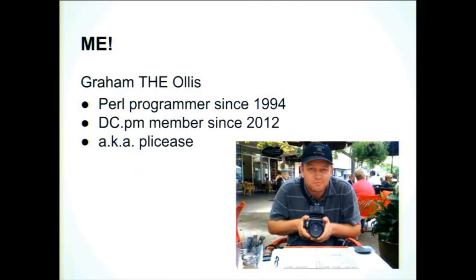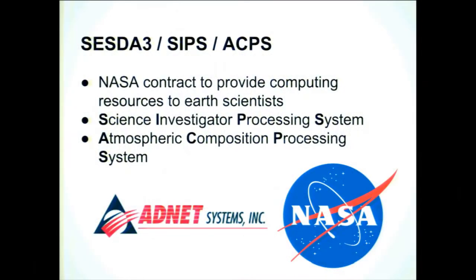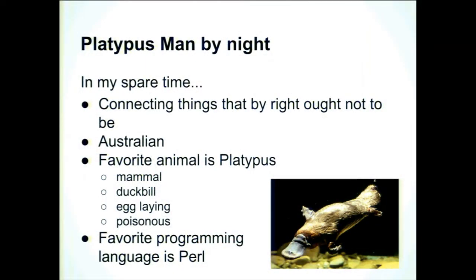Most of you probably don't know who I am. My name's Graham Ollis. I've been a Perl programmer for about 20 years, but most of the time has been spent on dark pen projects. Two years ago I joined CPAN and I started putting some stuff on CPAN, so I've been more contributory. I work for ADNET on a NASA contract to provide computing resources to Earth scientists.